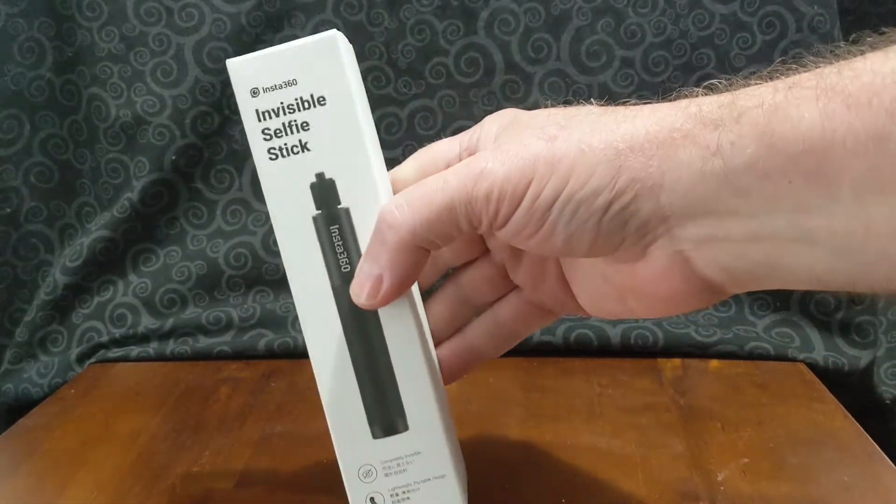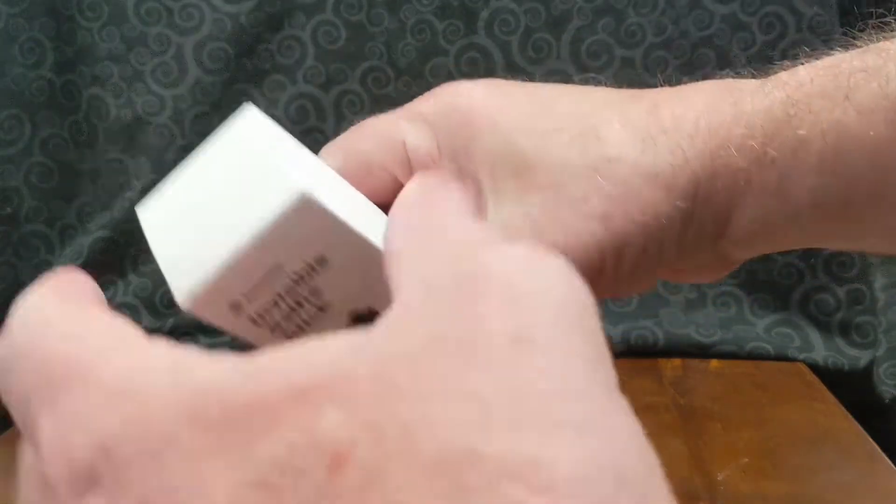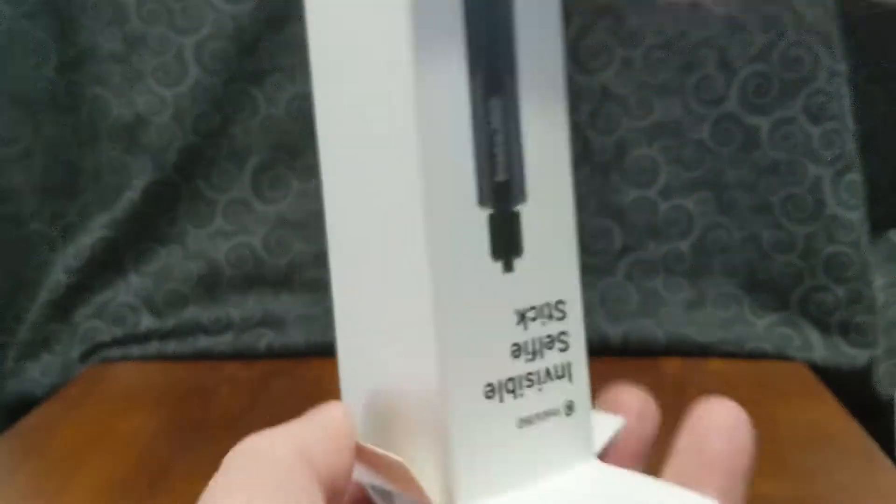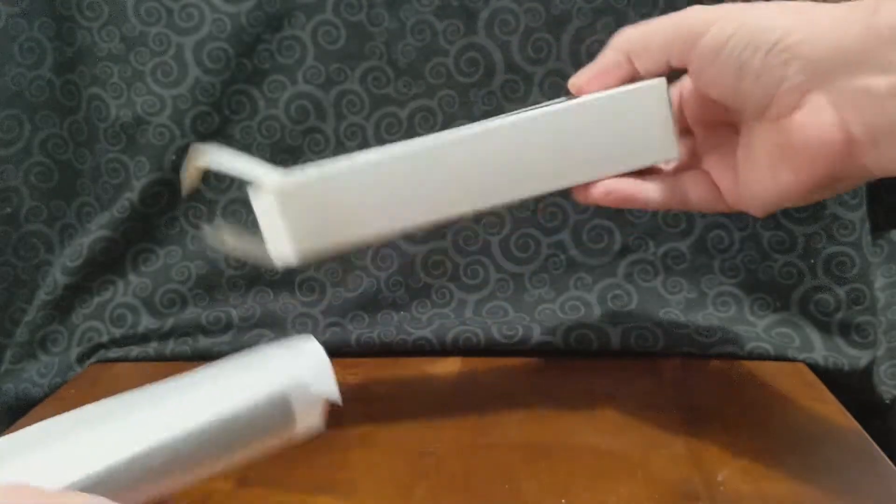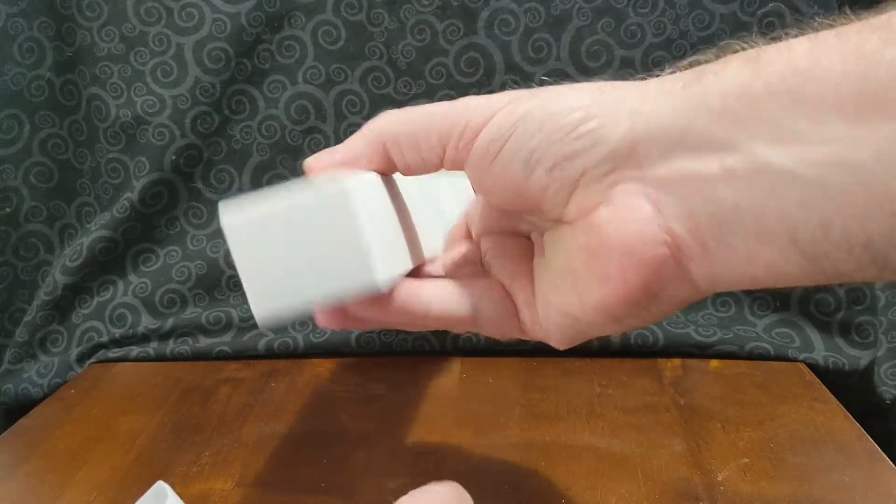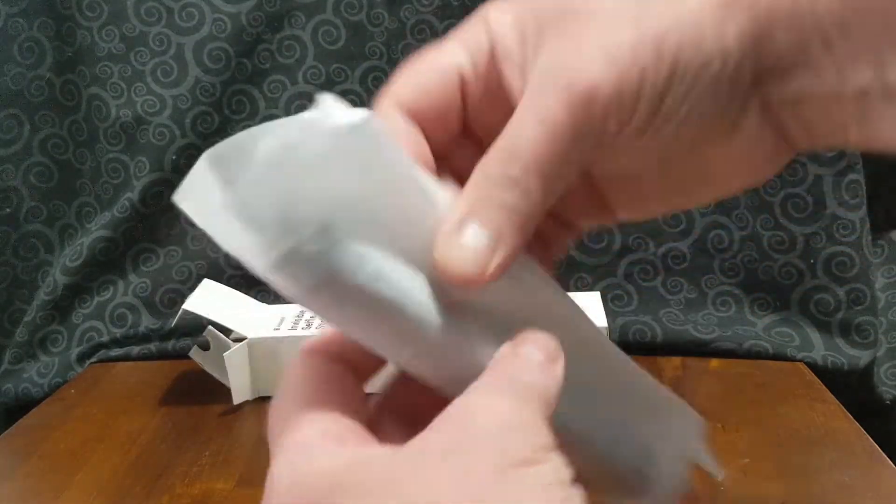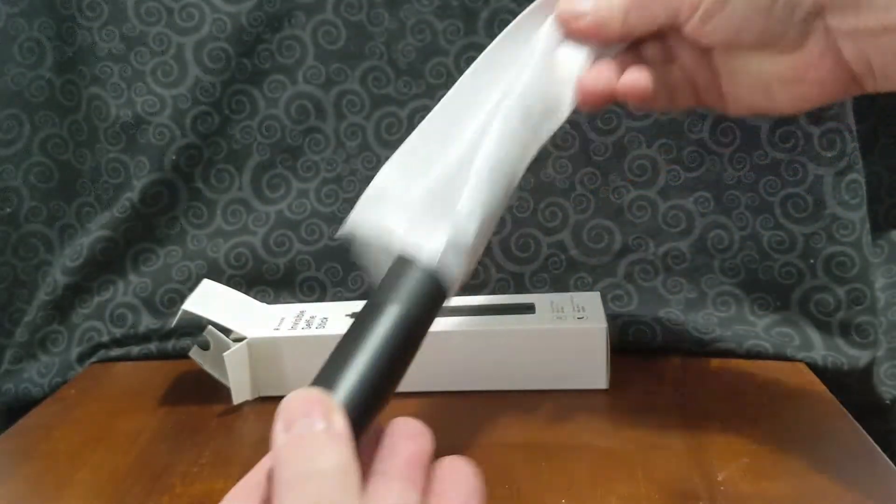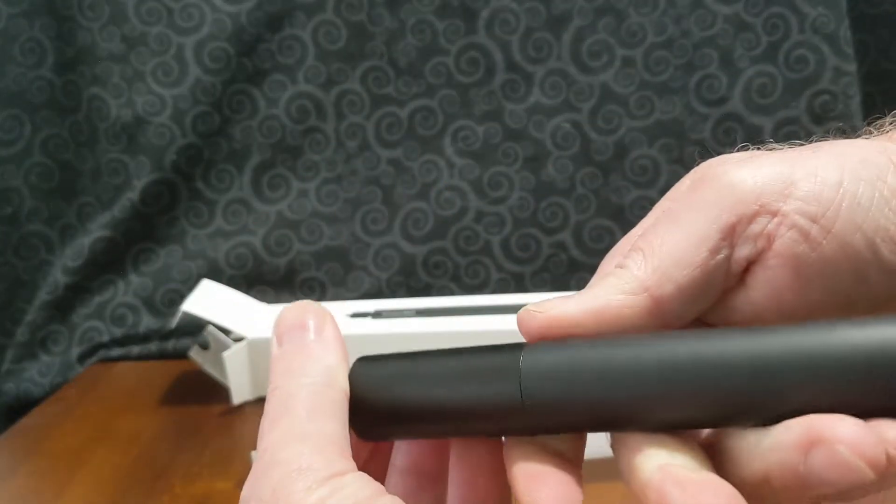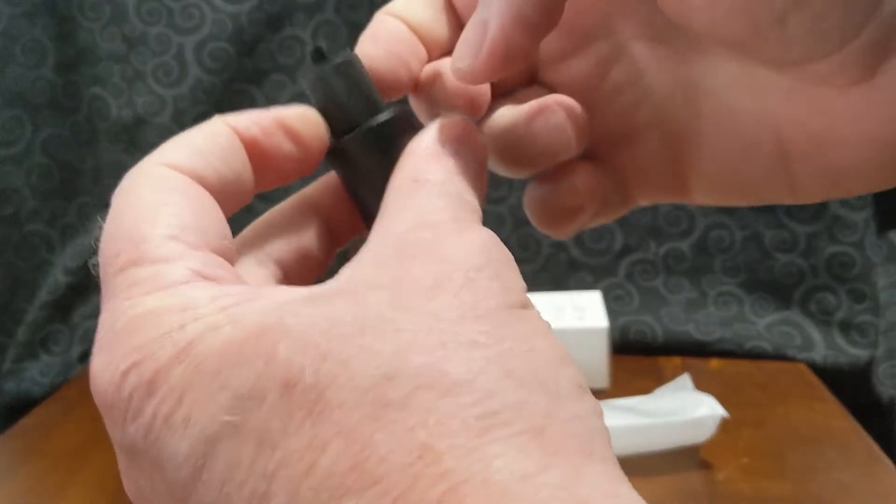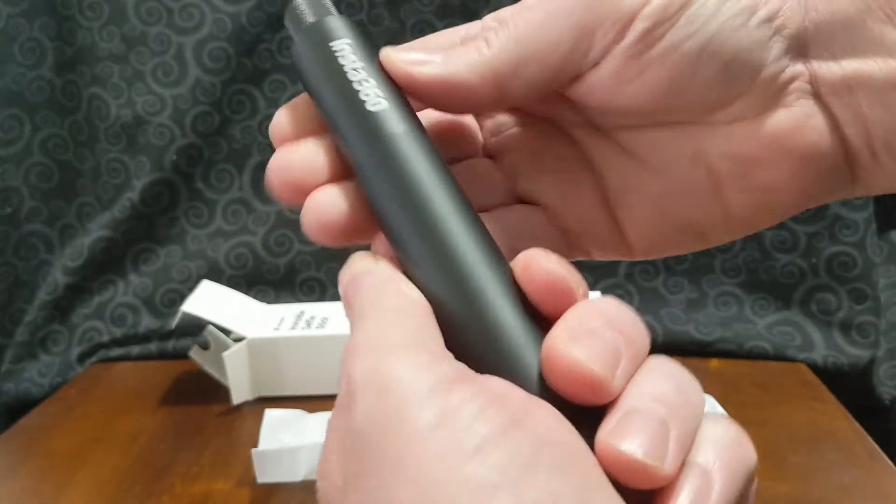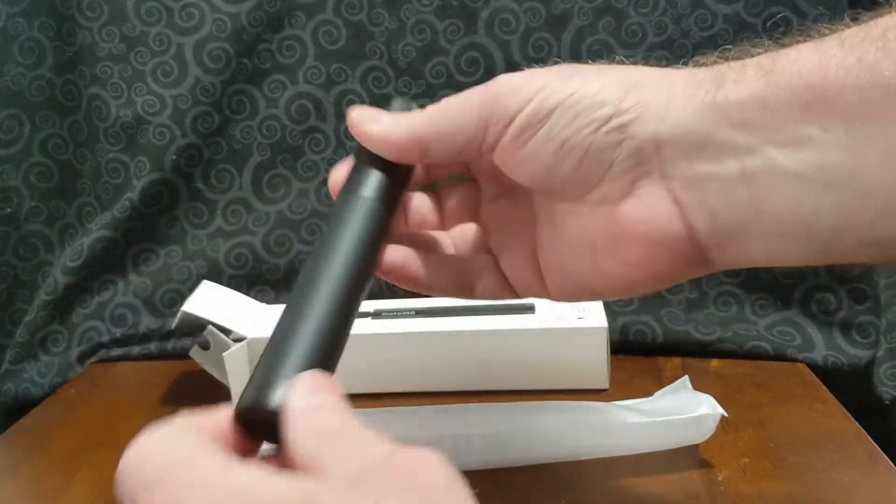I also ordered the invisible selfie stick. Let's take a look at that. What else? And you have a stick. Oh wow, this is really well made. It's like metal here. So this isn't just all cheap plastic. It feels like aluminum.